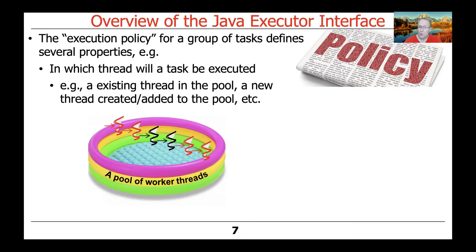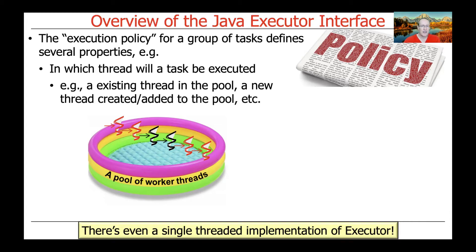One key question is: in which thread will a task be executed by the executor implementation? Will it be in an existing thread in the pool, which is the case if you choose a fixed-size thread pool implementation? Will it be a new thread that's created and added to the pool? Or a new thread that's created but not added to the pool? There's even a single-threaded version of the executor that doesn't use a pool at all.